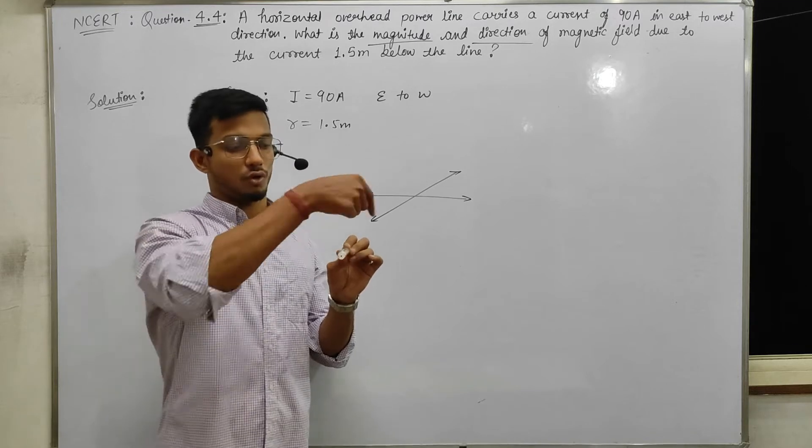So B is equal to 120 into 10 to power minus 7 Tesla. If you write this in scientific notation, it will be 1.20 into 10 to power minus 5. When we shift the point left, we plus it. So this is the magnitude.